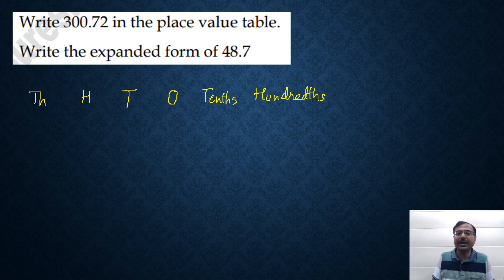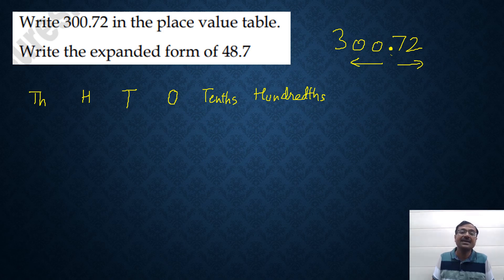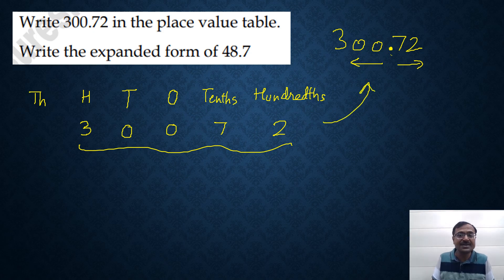If you want to write 300.72, the decimal is here. This decimal is the separation between ones, tens, hundreds and tenths, hundredths and so on. If you write ones as 0, tens as 0 and hundreds as 3, then tenths as 7 and hundredths as 2, then this actually represents this decimal number 300.72. Or you can say three hundreds.